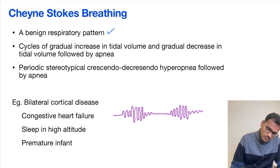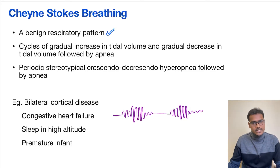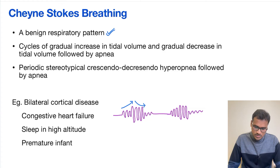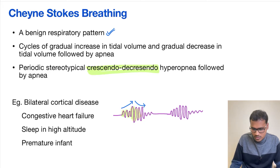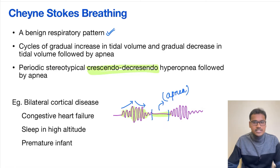Coming to the Cheyne-Stokes respiratory pattern: it is a benign form of respiratory pattern. In this, what happens is there is a gradual cycle of increase in respiration followed by a decrease in respiration — that is, the tidal volume keeps on increasing and finally starts to decrease, and vice versa. This periodical, stereotypical crescendo-decrescendo pattern is followed by apnea in between.